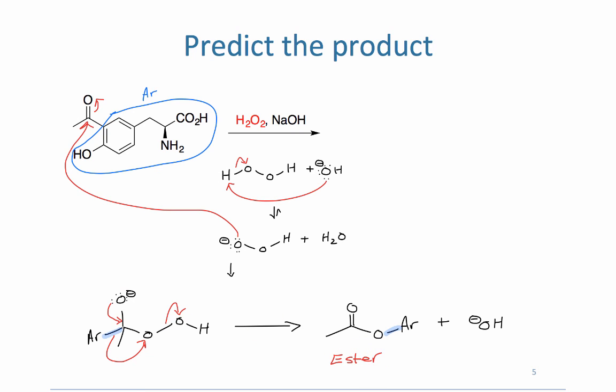The Bayer-Villiger reaction is a great way to make esters from ketones. It does so under fairly mild conditions. Notice that there are these other functional groups that were tolerated, or in other words, they didn't react.